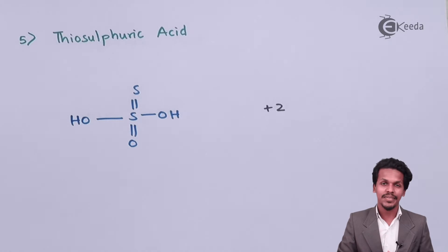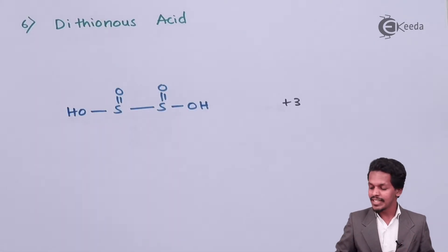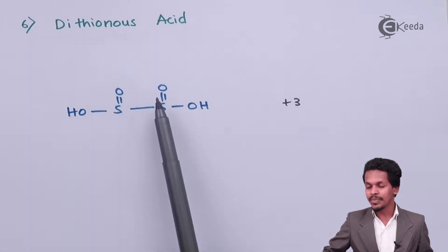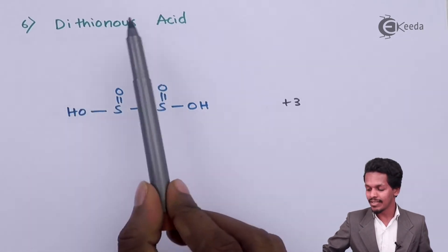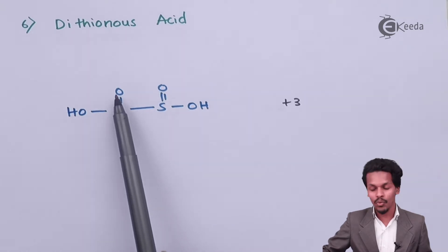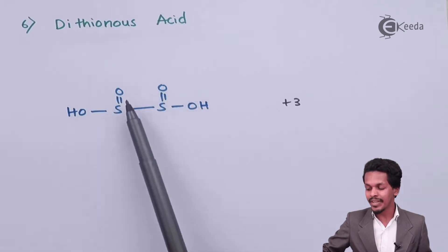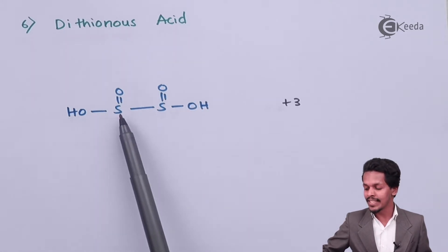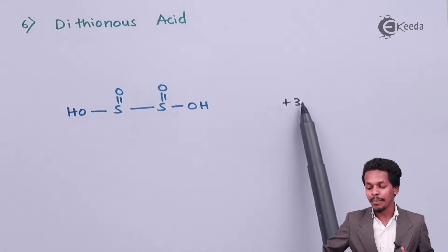The next is dithionous acid. Here we can find that sulfur is attached via a double bond to oxygen and also to an OH group, and this same group is repeated and the two groups are joined together. The oxidation state of sulfur is +3.